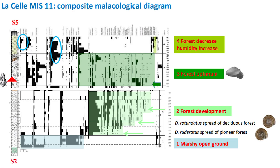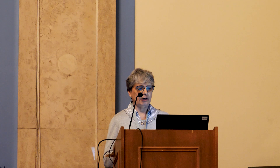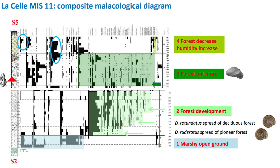At La Sède, the composite malacological diagram allows us to identify four environmental steps. The first is composed of an assemblage of marsh and open ground species. Then the forest species appear and develop very rapidly during the second phase, during which the Discus succession allows us to identify the first episode of boreal forest, followed by the spread of the deciduous forest. There is then a maximum diversity of forest taxa corresponding to the optimum of the interglacial. Finally, the fourth phase shows another strong decrease in forest species, while some allochthonus taxa return, defining an episode of forest decline.